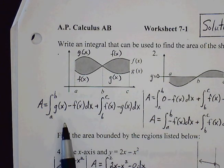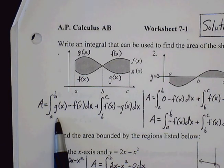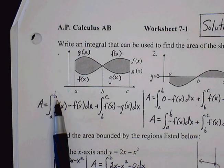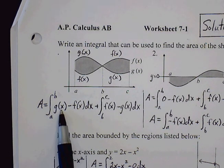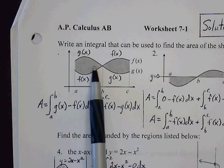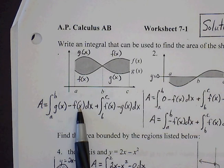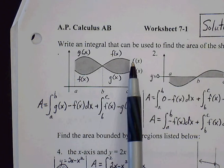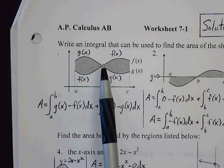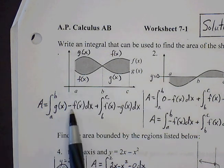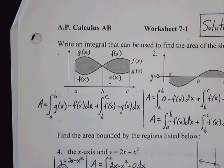So we plug into our area formula, which is left bound to the right bound for the first region, upper bound, top function minus the bottom function. So in this first region here, top function is g of x and bottom function is f of x. For the second region here, top function is f of x and the bottom function is g of x. So because the graphs alternate between top and bottom, we have to split this up into the sum of two definite integrals if we want to find the area of those two regions.